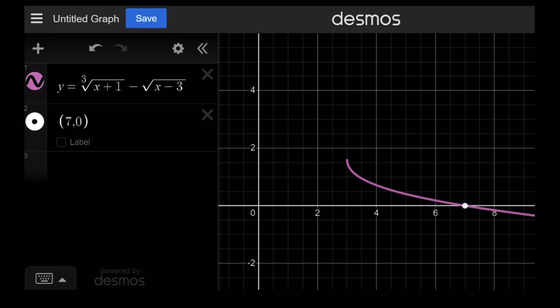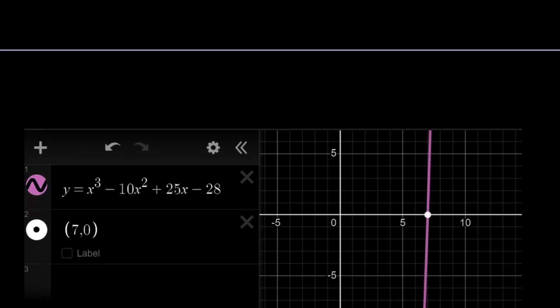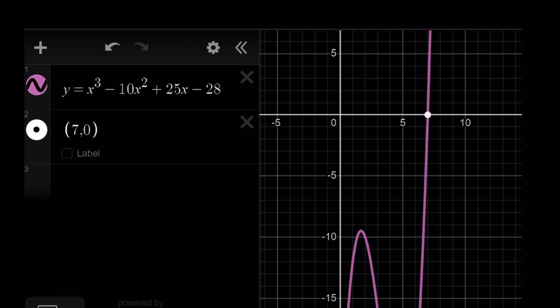This is one of the graphs, which is the radicals. You can see 7, 0 is a solution. And the other one is the cubic. Again, 7, 0 is a solution. This brings us to the end of this video. Thank you for watching. I hope you enjoyed it. Don't forget to comment, like, and subscribe. I'll see you next time with another video. Until then, be safe, take care, and bye-bye.